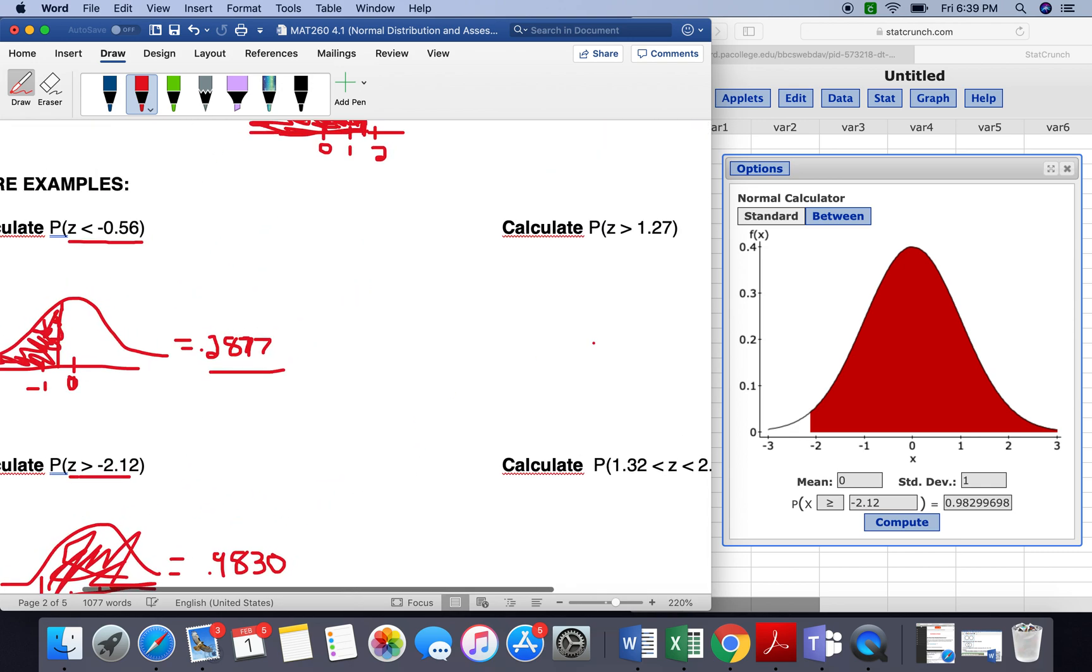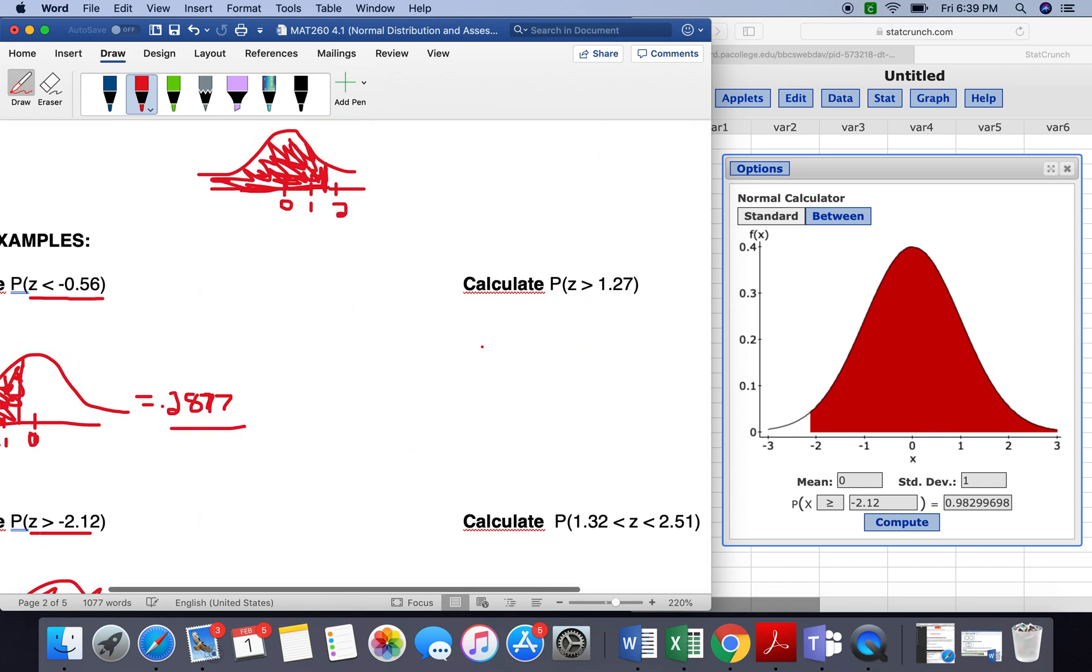So the next example here, we have greater than a positive. So I'm going to draw this one out. And again, 0 in the middle, we have our 1, and 1.27 will probably be about here. So we're going to shade in this part here.